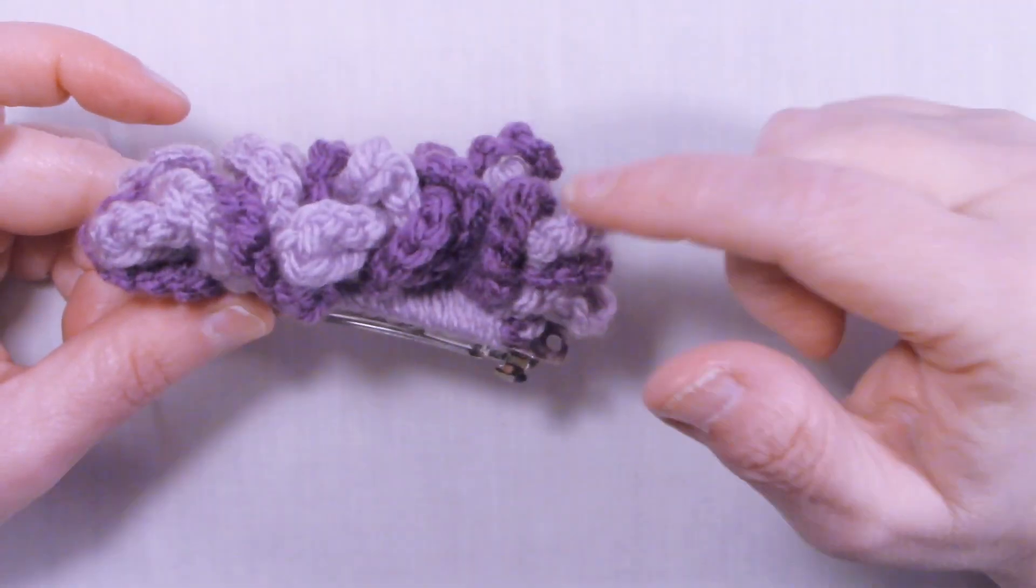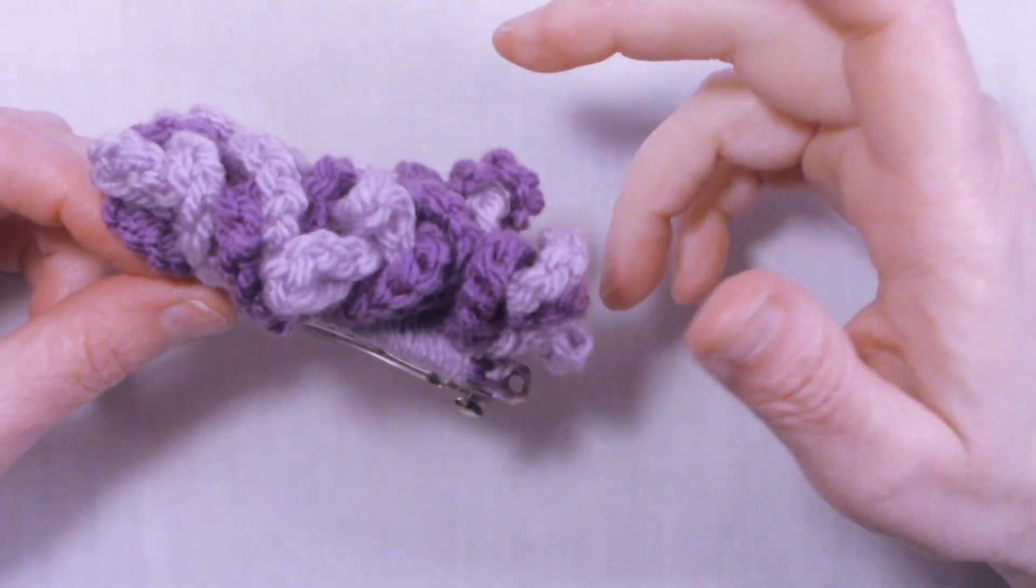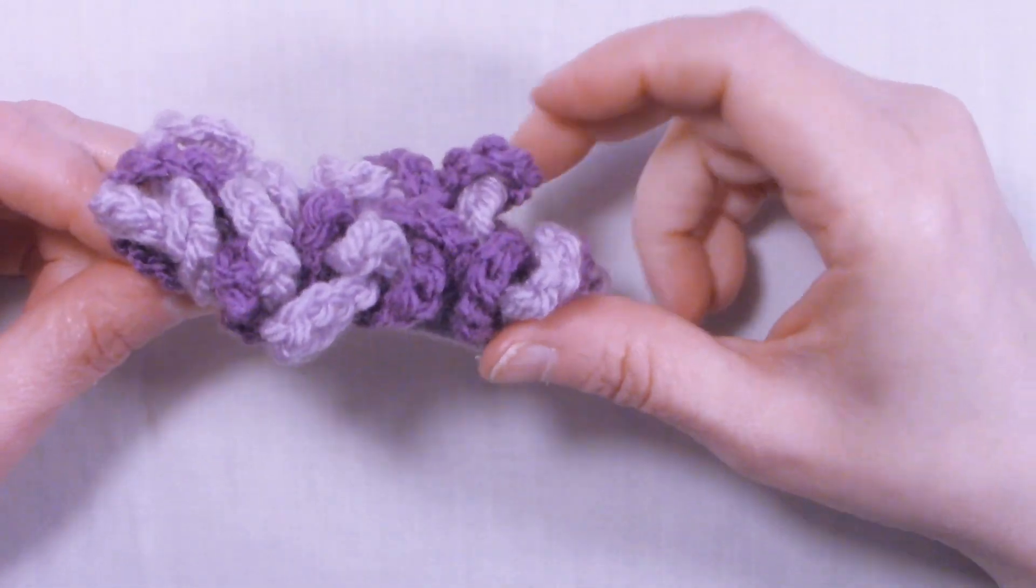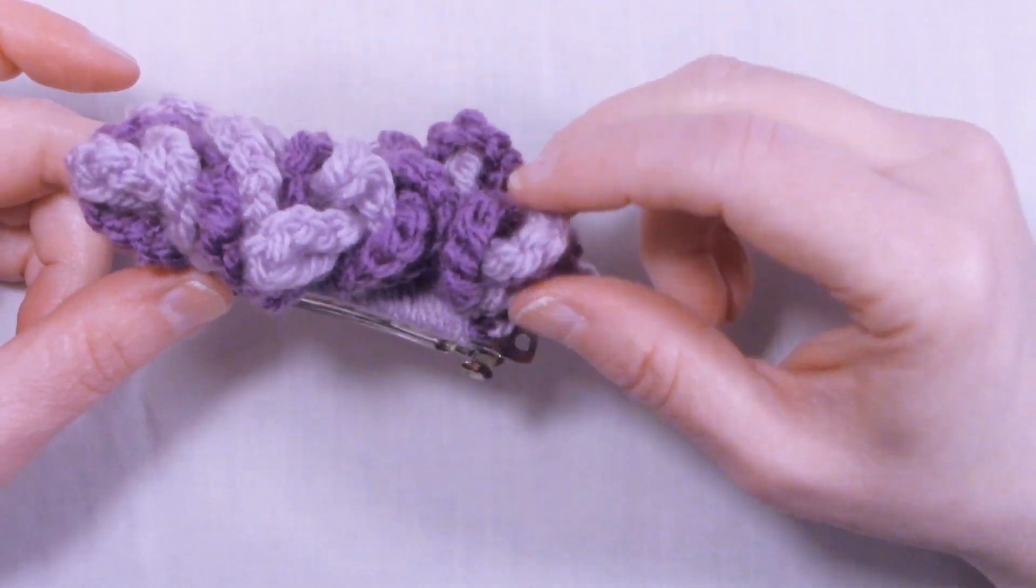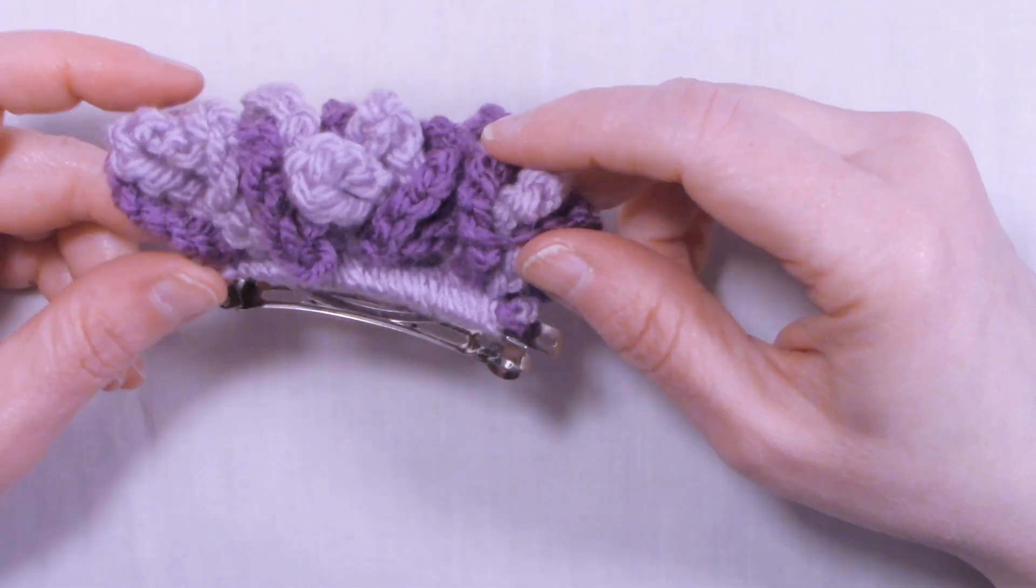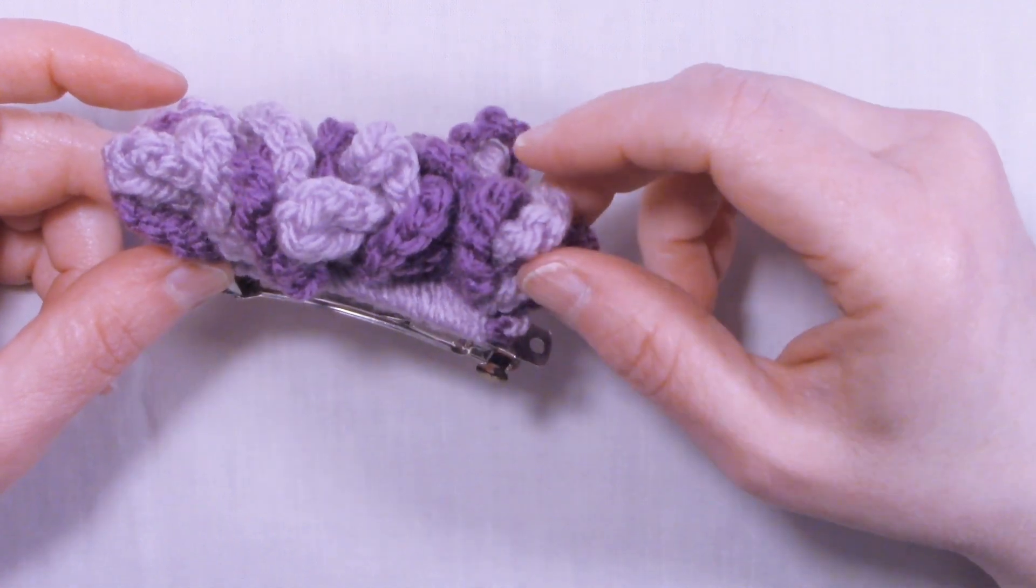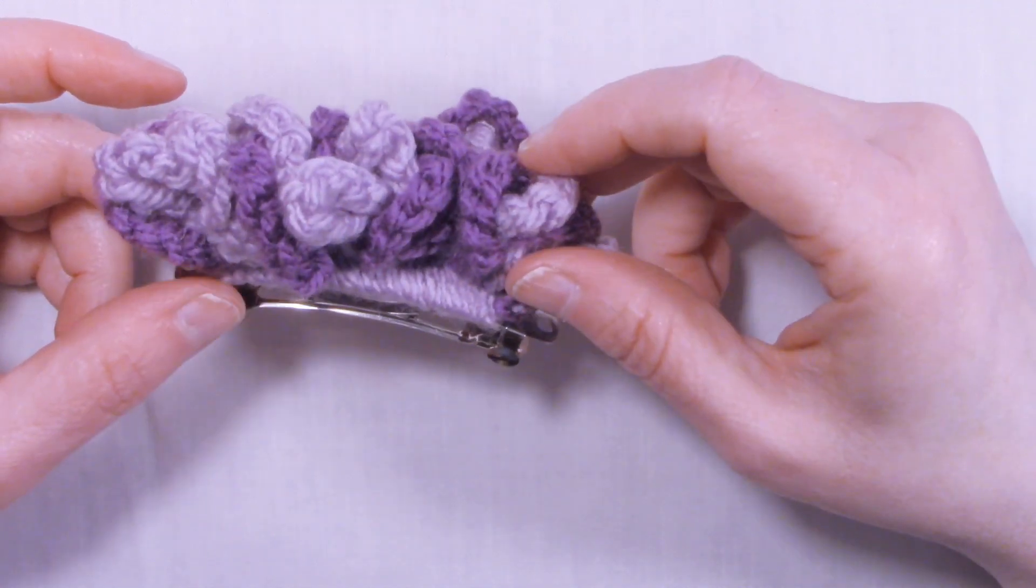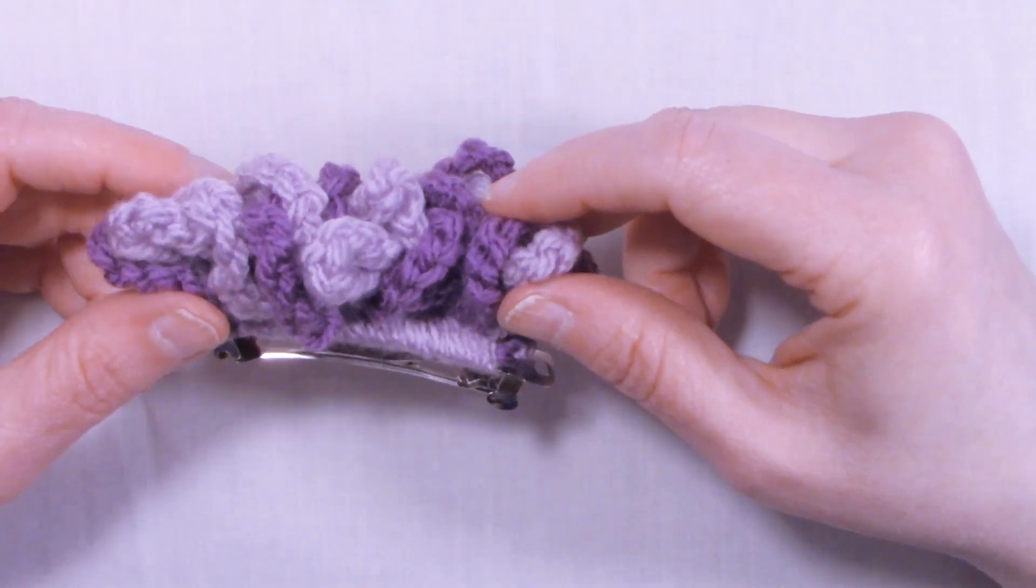Now I did this in worsted weight yarn, but you could probably do it in any weight yarn. I probably wouldn't go down any thinner than a sport weight or a DK weight, because a fingering weight would probably be a little too thin to do one of these, but it's really up to you, you could try.